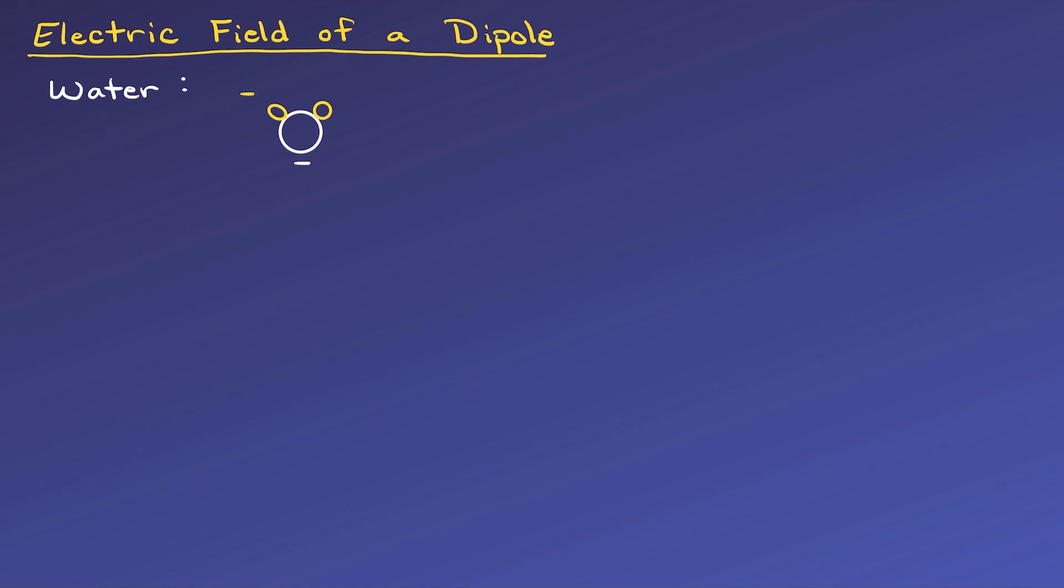Water molecules have a positive side, where the hydrogen atoms are, and a more negative side, where the oxygen atom is. Another example of dipoles is a dipole antenna, which is pretty easy to model and has a practical application. Since dipoles occur in nature and have these practical uses for us, it's important that we understand them.